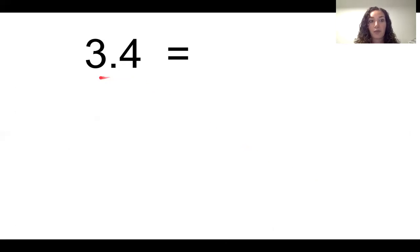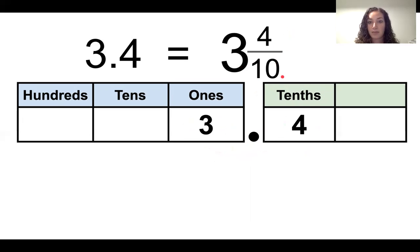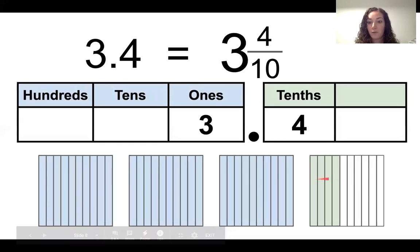Let's take that a step further. What if we had 3.4? How would we read and model that? The three goes in the ones place, and the four goes in the tenths place because it's the first digit after the decimal point. Using what we know, the decimal point means 'and,' so we read it as three and four tenths. As a mixed number, it would be three and four tenths. For the model, we have three wholes — all shaded in — and then four tenths, so we add a model of four shaded in out of ten equal pieces.